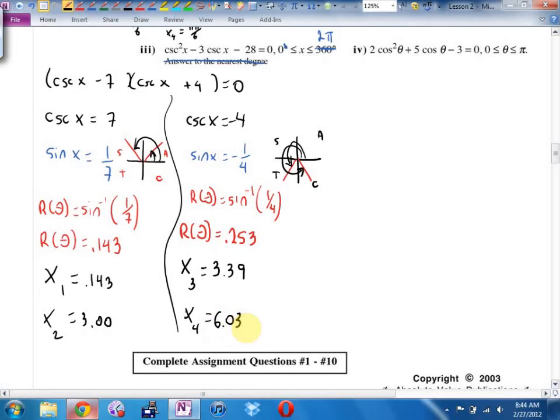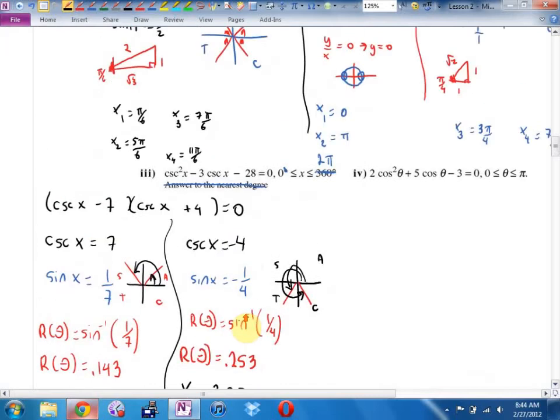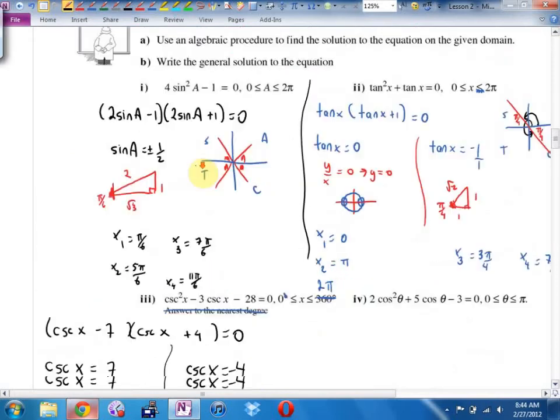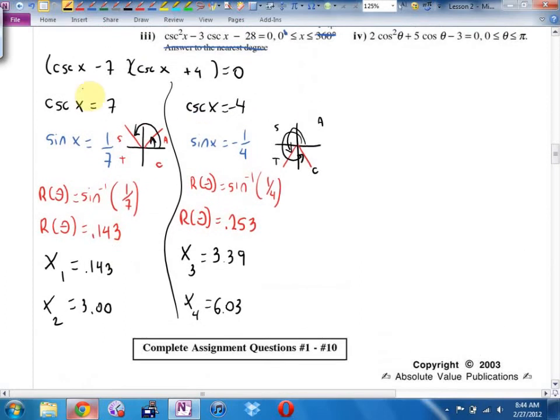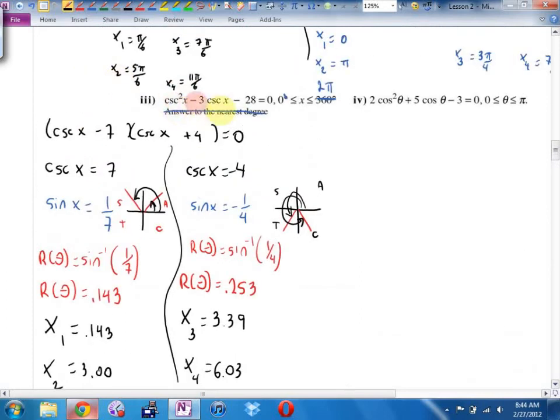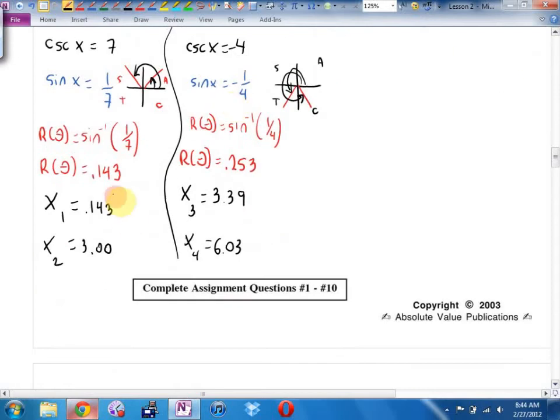Now, remember, at the very top of this question, they also wanted the general solution. If they wanted the general solution, first of all, we go back to the original equation. We check, is there anything in front of the x's at all? Nope. So what's the period here? Cosecant. What's the period of cosecant? If they want the general solution, you would say plus multiples of 2π. So 2πn where n is an integer.